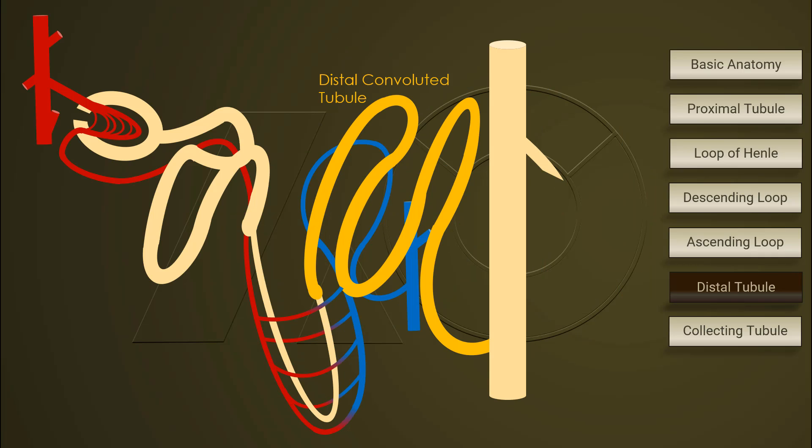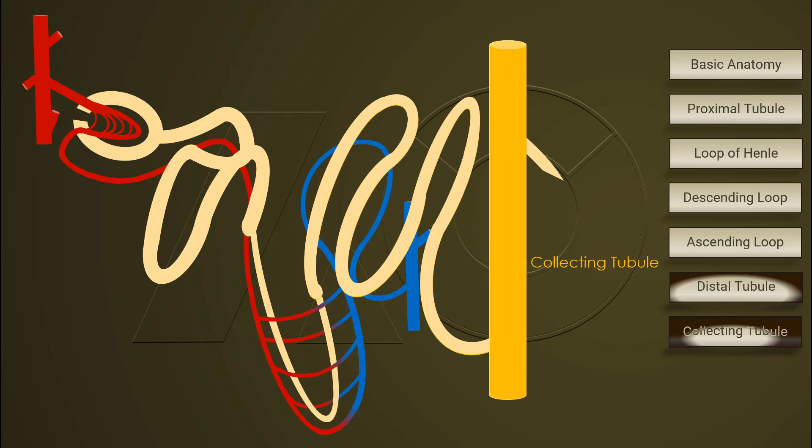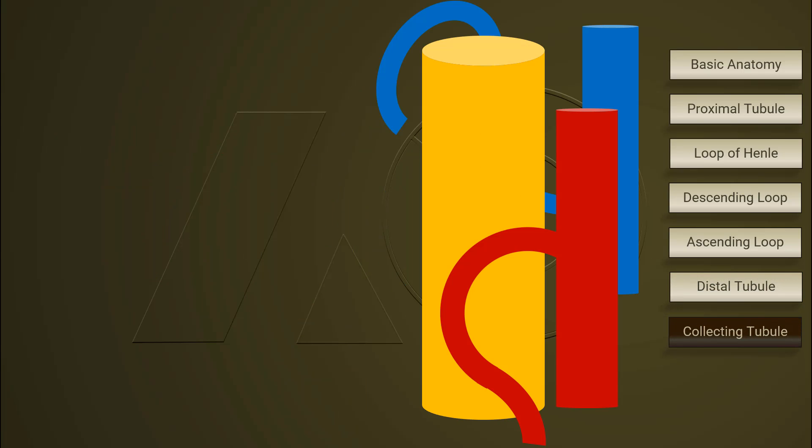The collecting duct and tubule is the last part of a nephron. Two hormones regulating the reabsorption and excretion of cations and ions here are aldosterone and antidiuretic hormone. The principal cells of collecting tubule transport sodium, potassium, and water, while intercalated cells excreted hydrogen.